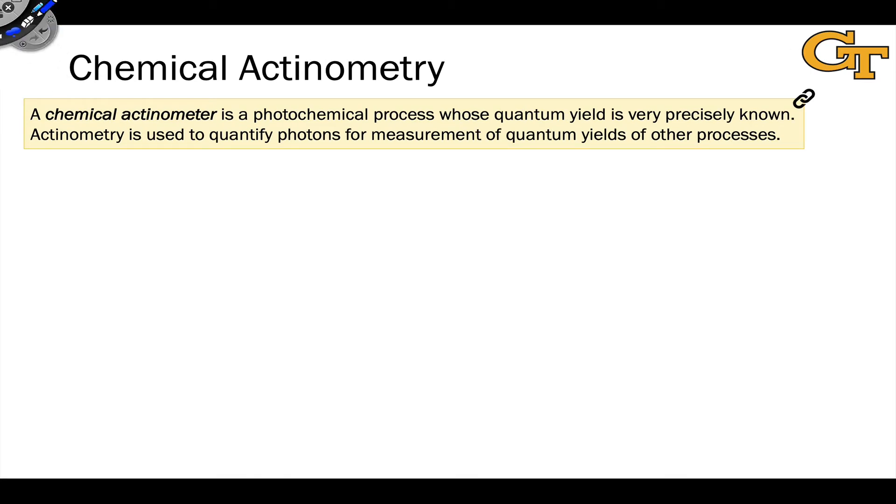Because physical detectors need calibration anyway, it's often more convenient to make use of a system where we know in great detail the quantum yield of a particular process. And this is what's known as a chemical actinometer.